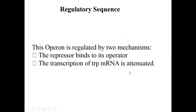There are two regulatory sequences in the tryptophan operon. One is the repressor that binds to its operator site. The other is the attenuation of tryptophan mRNA transcription. So there are two regulatory regions: the operator and the attenuator site.